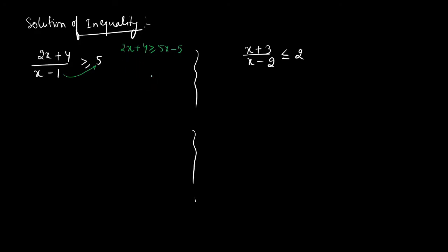Many students directly cross-multiply and solve it, but we have to focus on one important thing: when we have inequalities, we don't directly cross-multiply and change x. Instead, we move everything to the right-hand side to make it 0. So the left-hand side becomes (2x + 4)/(x − 1) − 5 ≥ 0. We will not cross-multiply here.